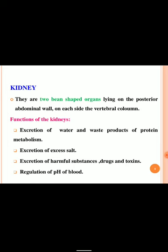In the urinary system, the major important component is the kidney. They are two bean-shaped organs lying on the posterior abdominal wall on each side of the vertebral column. The major functions of kidneys include excretion of water and waste products of protein metabolism, excretion of excess salt, excretion of harmful substances like drugs and toxins, and regulation of pH of blood.